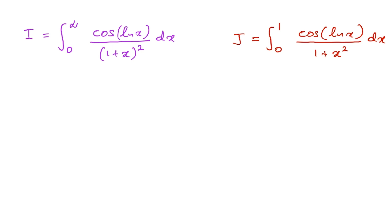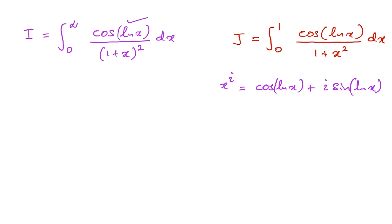In the numerator we have cosine of natural log of x. Using Euler's formula, we know x to the i is equal to cosine of natural log of x plus i times sine of natural log of x. So cosine of natural log of x is equal to the real part of x to the i.